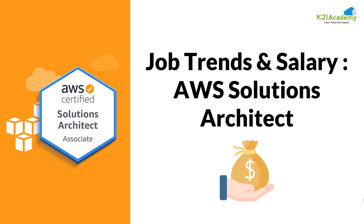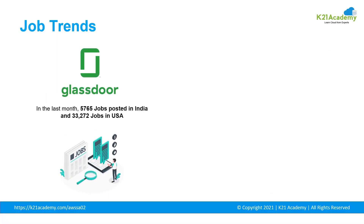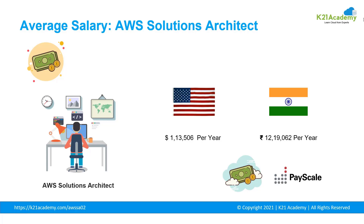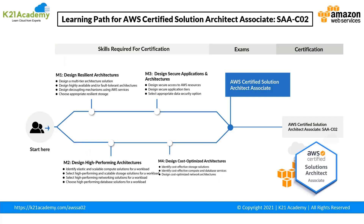According to Glassdoor, in just the last month there were 5,765 different jobs posted in India and 33,272 in the United States for cloud architects. According to Forbes, cloud architect is in the top 15 list of highest-paying technical jobs. According to Payscale, the average salary of an AWS solutions architect in the US is $113,506 per year, and in India it is $119,062 per year. The certification covers design of resilient, high-performing, secure, and cost-optimized architectures.